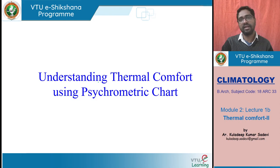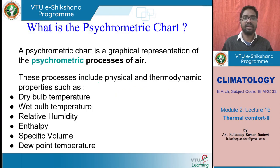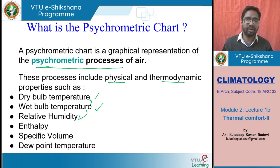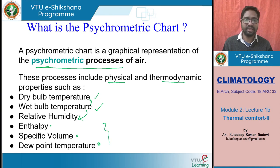We will now see what is psychrometric chart and how it can be used to analyze climatic parameters of different places. Psychrometric chart — the word means physical and thermodynamic properties of air — and we are trying to chart out all these parameters, all the psychrometric processes of air, into one single chart. The parameters are: dry bulb temperature, wet bulb temperature — if we know these two, relative humidity is factored into the picture — and enthalpy which is nothing but heat, specific volume, and dew point temperature. These are the six parameters represented in a psychrometric chart. This is a rough picture of a psychrometric chart — we will discuss in detail how it is used and what inferences can be drawn.